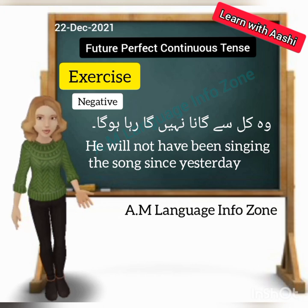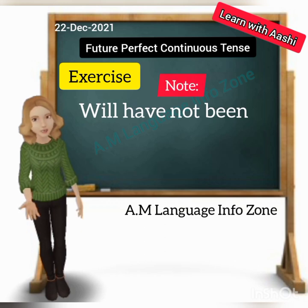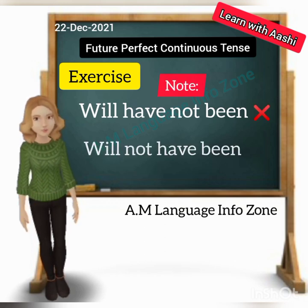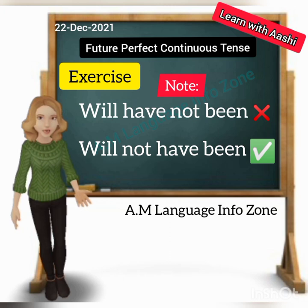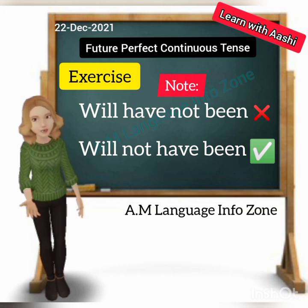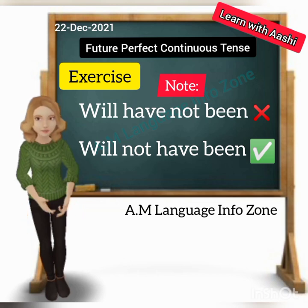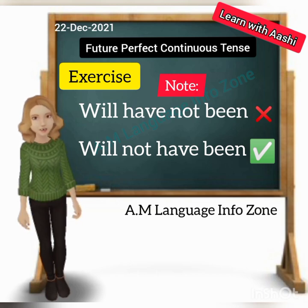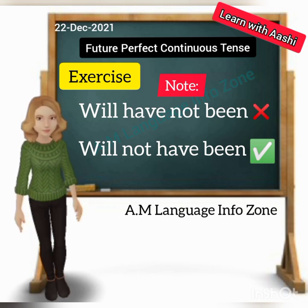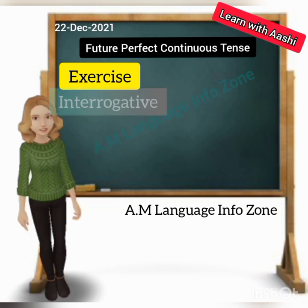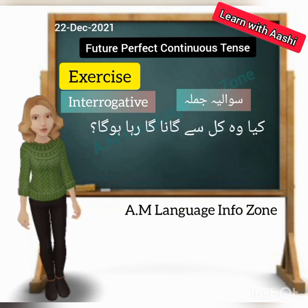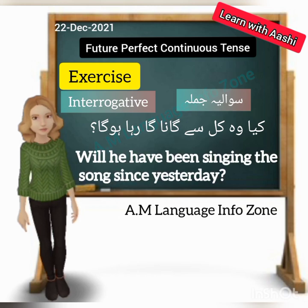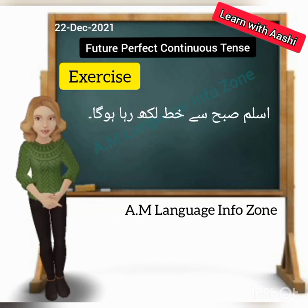Students often make one mistake: they know 'not' is used for negatives, but they place it in the wrong position. 'Not' will come between 'will' and 'have': 'He will not have been...' Some students write 'not' after 'will have,' thinking 'will' and 'have' are connected words that cannot be separated — that is incorrect. It is 'He will not have been,' not 'He will have not been.' Do not make this mistake. The interrogative form: 'Will he have been singing this song since yesterday?'